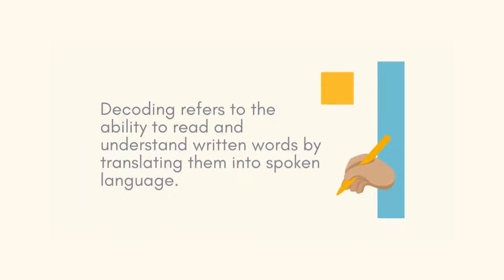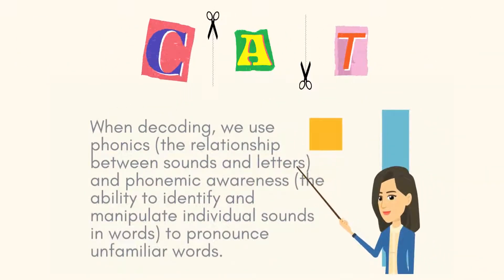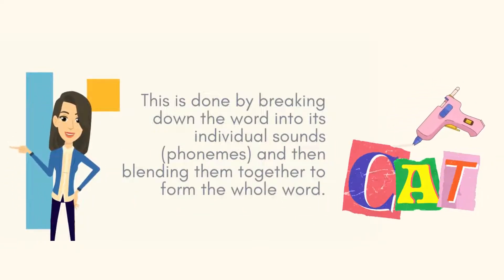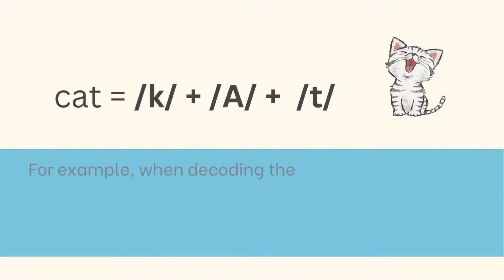Decoding refers to the ability to read and understand written words by translating them into spoken language. It is a crucial component of reading comprehension and involves recognizing the sounds that letters and letter combinations make and blending them together to form words. When decoding, a reader uses their knowledge of phonics, the relationship between sounds and letters, and phonemic awareness, the ability to hear, identify, and manipulate individual sounds and words to figure out how to pronounce unfamiliar words. This is done by breaking down the word into its individual sounds, or phonemes, and then blending them together to form the whole word.